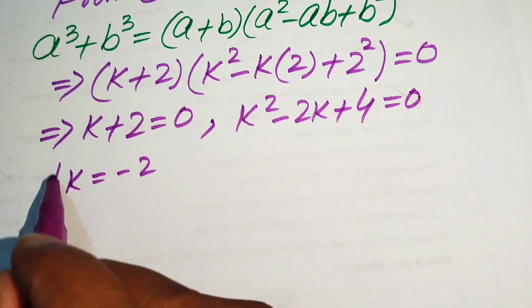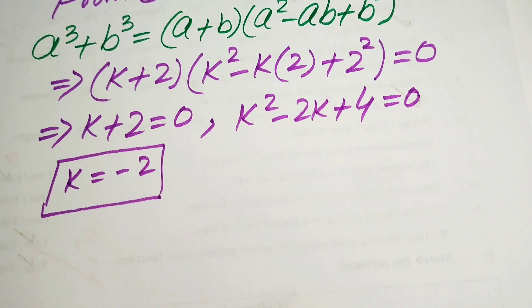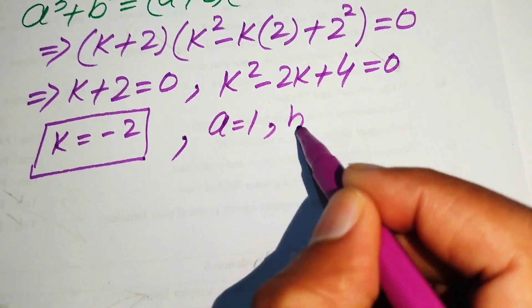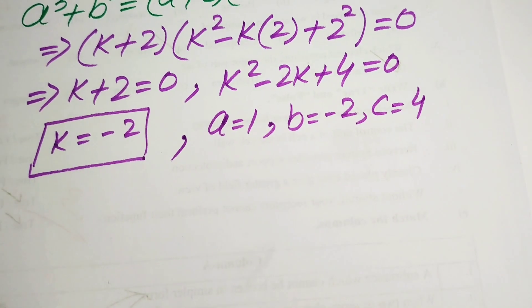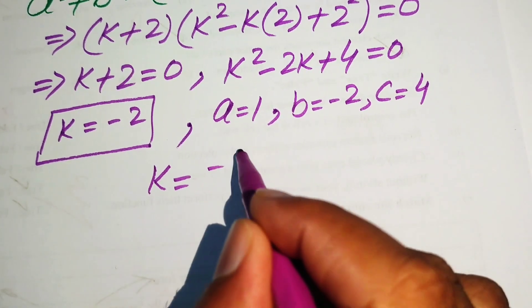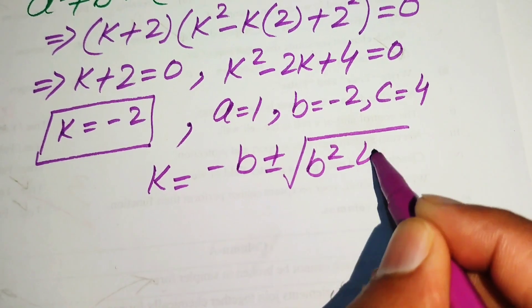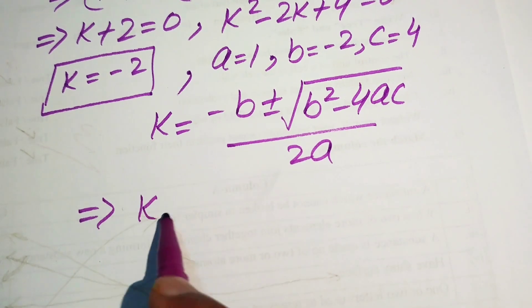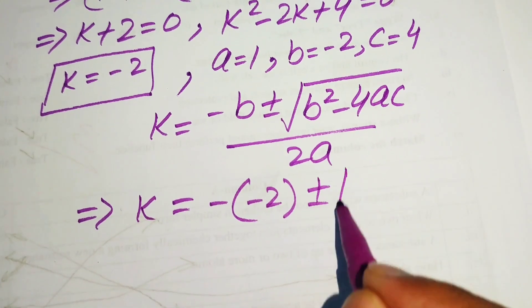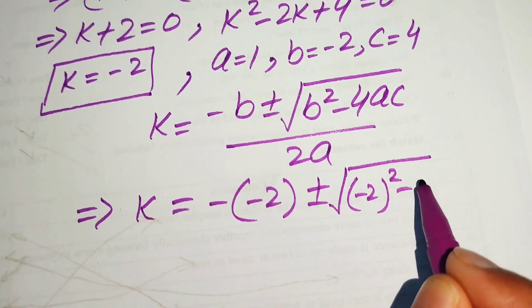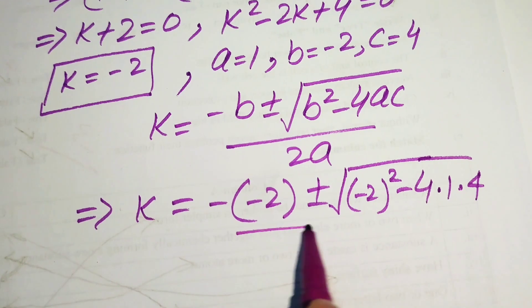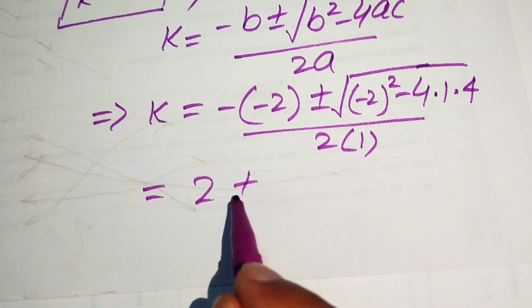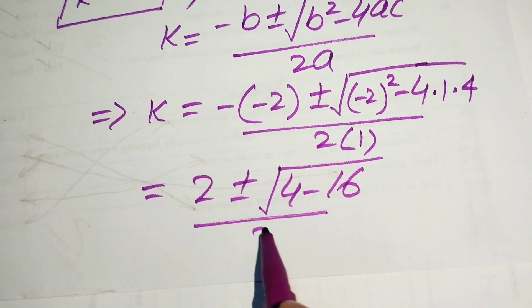From the first case, k equals minus 2, and this is the first root of equation 2. To find the other roots we apply the quadratic formula to k squared minus 2k plus 4 equals 0. The coefficients are a equals 1, b equals minus 2, and c equals 4. Substituting into the quadratic formula: k equals 2 plus or minus square root of 4 minus 16, divided by 2.